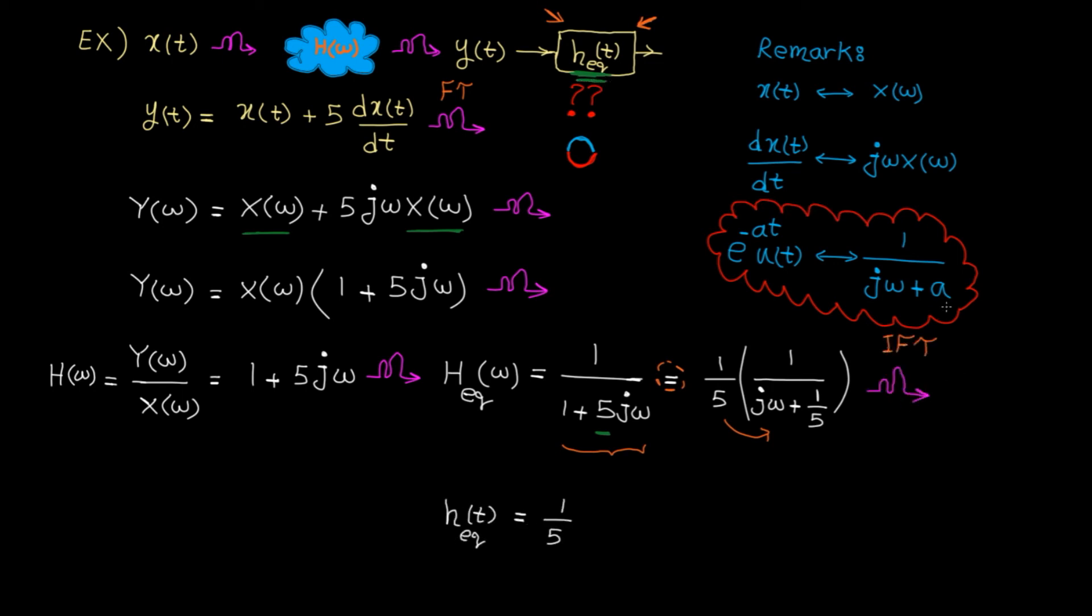Now we can use this pair to go back to the time domain and find h_eq(t). In this case, a is 1 fifth. So this is the equalizer in the time domain. Done.